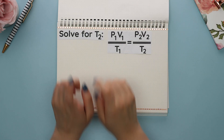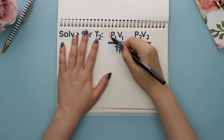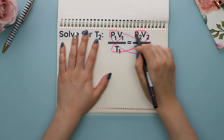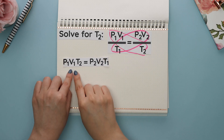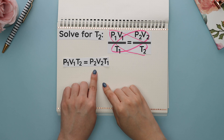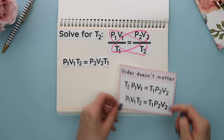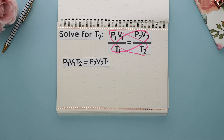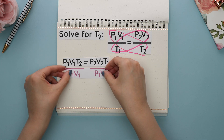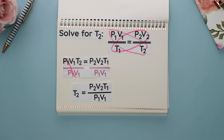Rearranging the combined gas law tends to confuse a lot of students — let's practice and solve for T2. We again have two fractions set equal to each other, so we use our trick and multiply diagonally. We multiply P1·V1 times T2 to get all these variables together on one side, set equal to P2·V2 times T1 on the other side. Since we are solving for T2, we divide by P1 and V1 at the same time on both sides — these cancel — and this is our answer for T2.